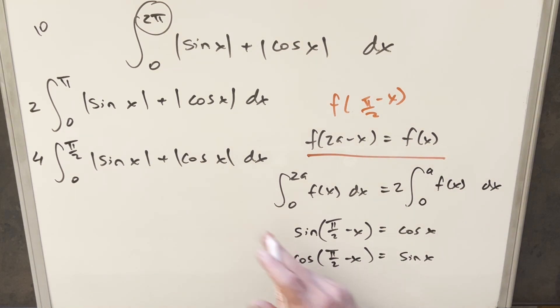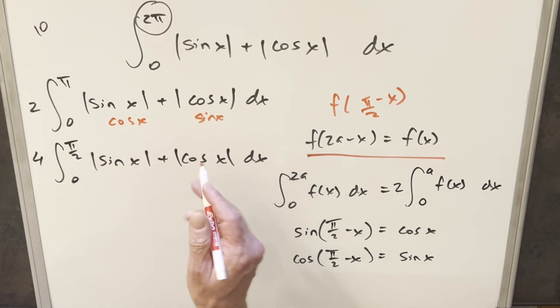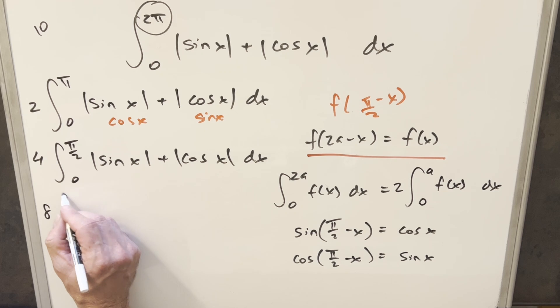This is a little different now, because this sine x over here, this is going to become cosine x, and this is going to become sine x. We reverse the order, but it doesn't matter. We still get back the same thing. So this is still true. We do this one more time. We bring another 2 out front. We create an 8, and now we're going from 0 to π over 4.